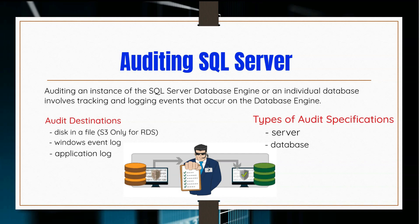When creating a specification, you can choose to record events grouped together in pre-configured audit action groups — such as the Backup Restore group, which logs any backup or restore activity, or a Database Permission Change group, triggered any time a GRANT, DENY, or REVOKE statement is issued by any user. Granular control is achieved by auditing specific events individually, such as when any SELECT or EXECUTE statement is issued.